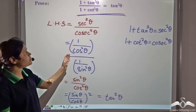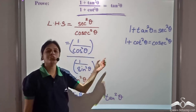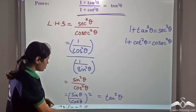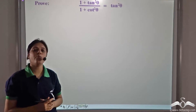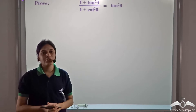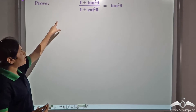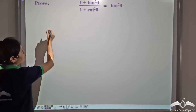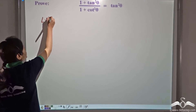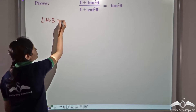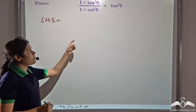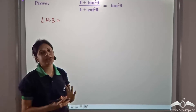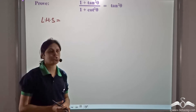Now, what if you don't remember these two identities? Well, you can still prove it by going back to the basics. So let us take the left hand side. Going back to the basics means convert everything in terms of sin and cos.